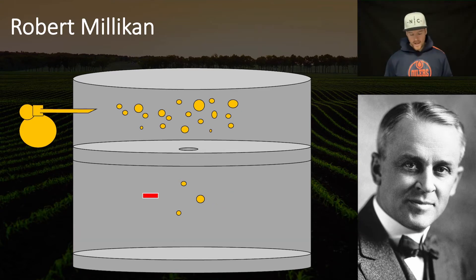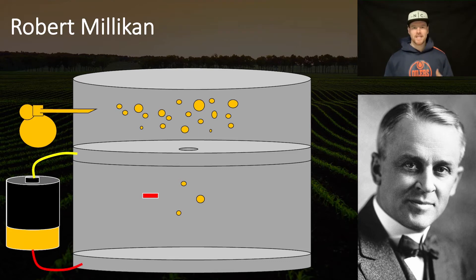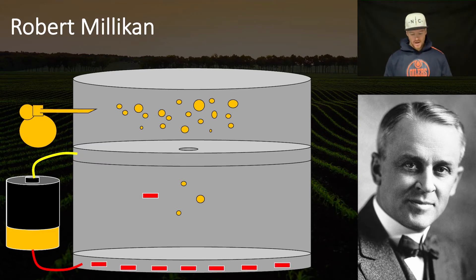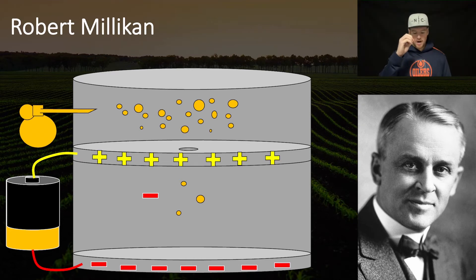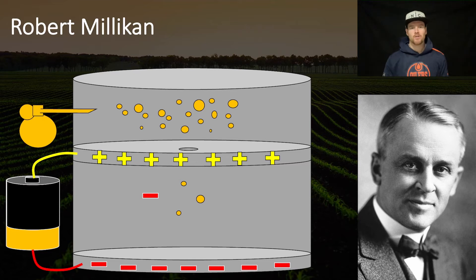Let's focus right now on the negatively charged ones. What he did was hook up a battery of sorts — a voltage towards these two plates, similar to the charge plates we talked about before. This is going to make an electric field between those plates. Let's say we have the negatives on the bottom and the positives on the top. Then if we have negative oil droplets, they're going to be repelled from the bottom and attracted to the top, so there's going to be this upward electric force acting on those oil droplets.